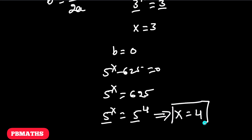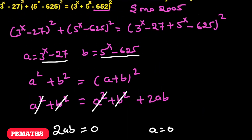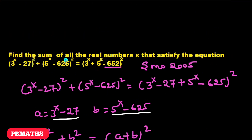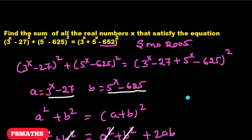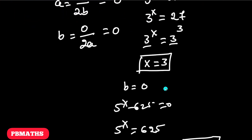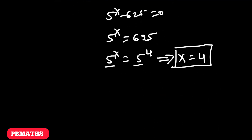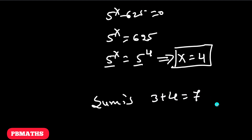So we found x = 3 and x = 4. The question asks for the sum of all real numbers x satisfying the equation. The sum is 3 + 4 = 7. That is the solution. I hope you all got this. Thank you for watching the video.